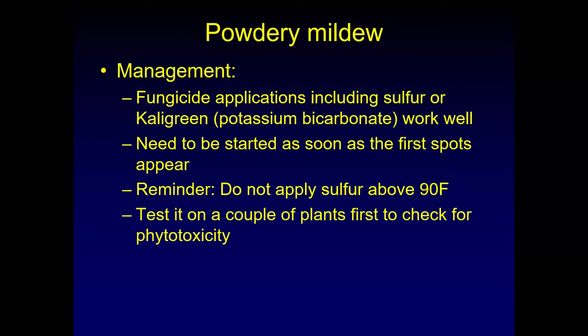To manage powdery mildew, fungicide applications including sulfur or Kaligreen work really well. You need to start as soon as the first spots emerge. As a reminder, do not apply sulfur above 90 degrees Fahrenheit — you will fry your plants. Apply it either very early in the morning so there are two or three hours until you reach 90 degrees and the leaves can dry off, or apply it later in the evening after it has cooled down below 90 degrees Fahrenheit. Also, if you use it on ornamentals, test a couple of plants first to check for a phytotoxic reaction to sulfur, since there are so many ornamental plants and even registered products may cause phytotoxicity on some.